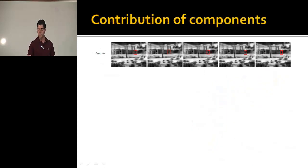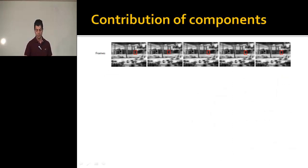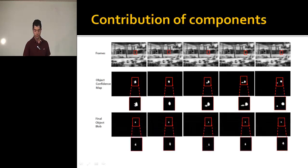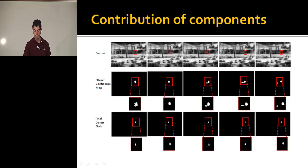We also evaluated the components of our method. Starting from the original frames, the confidence map yields blobs of objects, but they are noisy. After the optimization, those blobs are refined and the noise is removed, yielding much more accurate blobs.